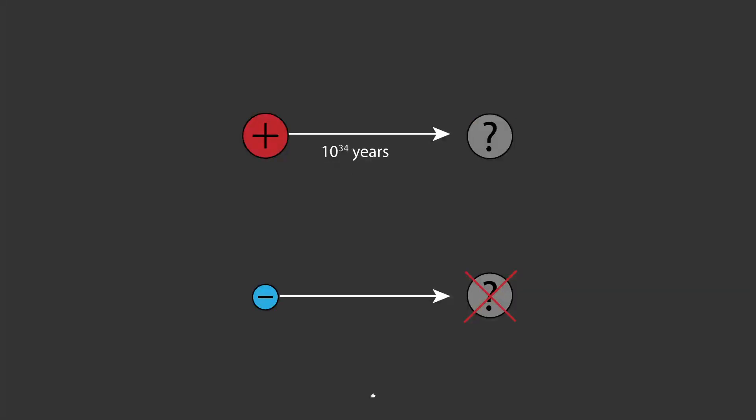This is not the same for protons and electrons, which seem infinitely stable. Some theories suggest that protons may decay in around 10 to the 34 years, so we may have to wait a while to see this.